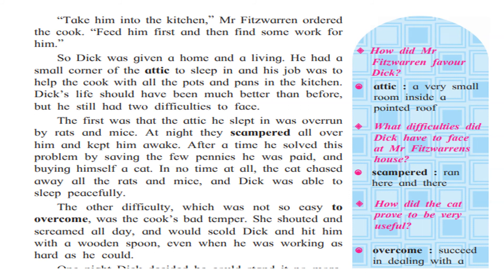Now his life is not settled — again he has difficulties. The first was that the attic he slept in was overrun by rats and mice. At night they scrambled all over him and kept him awake. After a time he solved this problem by saving the few pennies he was paid and buying himself a cat. In no time at all, the cat chased away all the rats and mice and Dick was able to sleep peacefully.